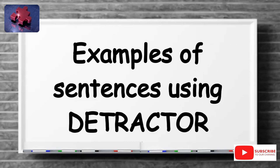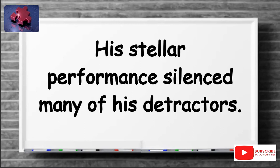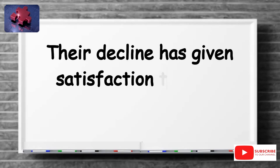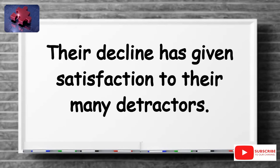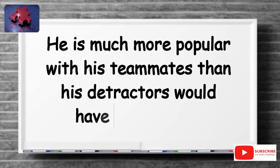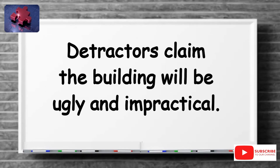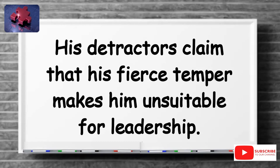Examples of sentences using detractor are: His stellar performance silenced many of his detractors. Even the president's detractors admit that the decision was the right one. Their decline has given satisfaction to their many detractors. He is much more popular with his teammates than his detractors would have you believe. Detractors claim the building will be ugly and impractical. His detractors claim that his fierce temper makes him unsuitable for leadership.